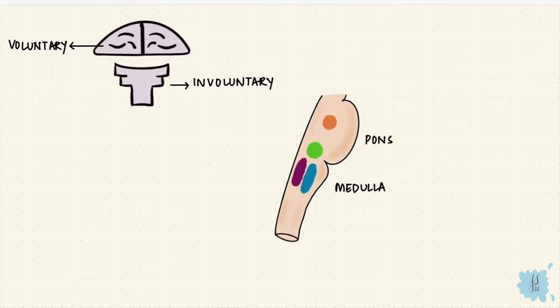Just a quick recap of part one. Respiratory control is both voluntary and involuntary. Voluntary control is by the cortex. Involuntary control is by the brainstem, that's the medulla and the pons. There are four groups of neurons, two each in the medulla and the pons.